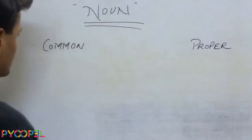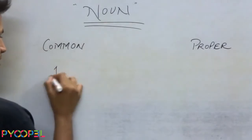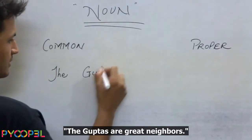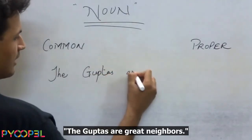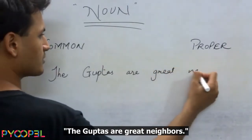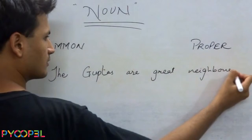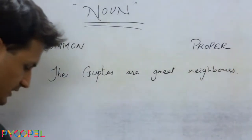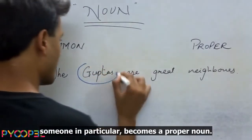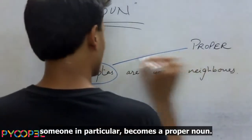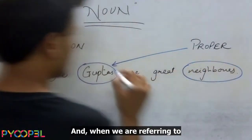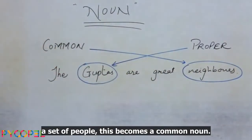In the sentence 'The Guptas are great neighbours,' the Guptas — because we are referring to someone in particular — becomes a proper noun, and neighbours — because we are referring to a set of people — becomes a common noun.